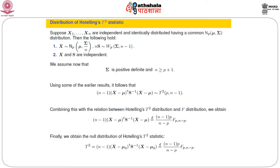X-bar has a multivariate normal distribution in the same dimension with mean vector mu and dispersion matrix sigma divided by n—exactly the same as the univariate setup, where the variance is divided by n. The corrected sum of squares n times S (the dispersion matrix) has a Wishart distribution in dimension P with scale matrix capital sigma and degrees of freedom n minus 1, exactly as in the univariate setup. And importantly, X-bar and S are independent, exactly as in the univariate setup.